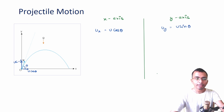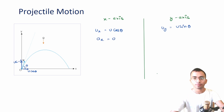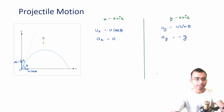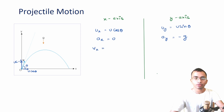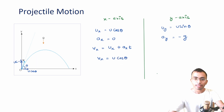The acceleration along the x-axis is 0 because there is no force along the x-axis, so a_x is 0. Acceleration along the y-axis is minus g because g is acting in the downward direction. The velocity along the x-axis at any time t is v = u + at, so v_x = u_x + a_x·t. Since a_x is 0, v_x always equals u cos theta — it remains constant.